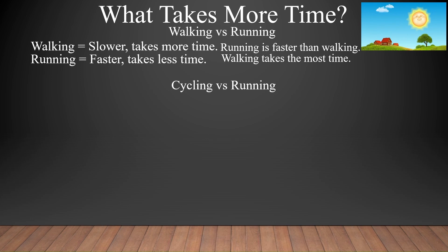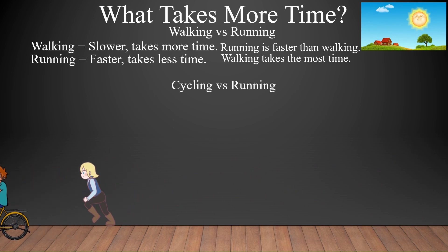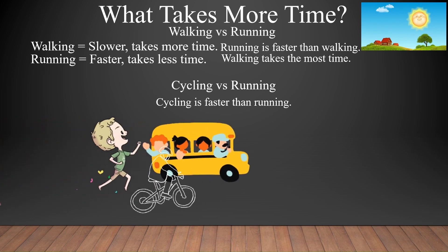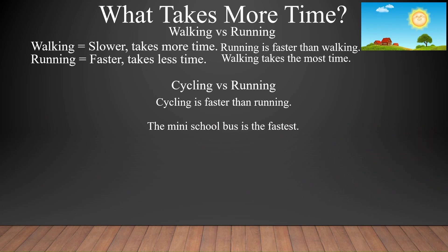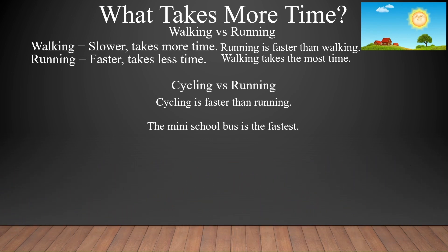Next: cycling versus running. One boy is cycling and one boy is running. Cycling is faster than running — in this case that is true, though it need not always be true. Here the mini bus is the fastest. One more example: cycling is again faster than running.